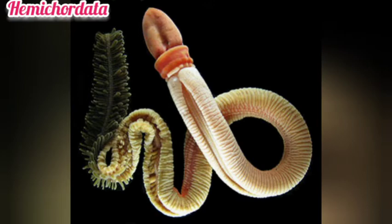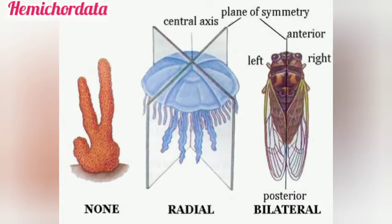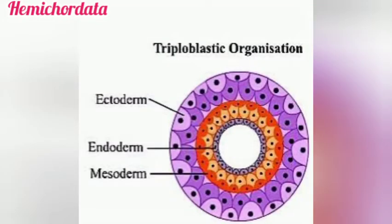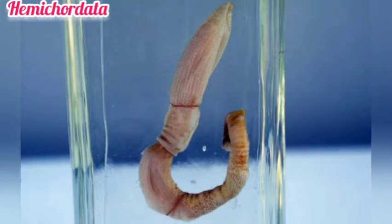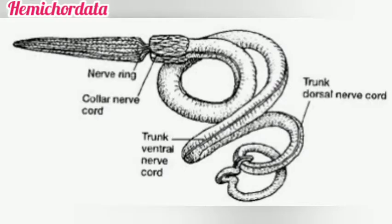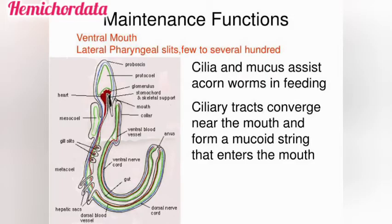They are bilaterally symmetrical and triploblastic in nature. They contain an organ-system level of organization. The body is cylindrical in nature and is divided into three regions: the anterior proboscis region, a short collar region, and a long trunk region. See the picture.